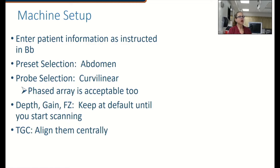You're going to enter your patient information in a standard format with an anatomy identifier plus the course you're in. The probe is typically going to be curvilinear, although a phased array would be acceptable — you would have to pay attention to your near zone as you might get a little more noise from a phased array. You would not want to set any scanning controls like depth, gain, or focal zone until you have begun scanning, and as the aorta changes its depth in the body, you're going to be changing those settings continually.